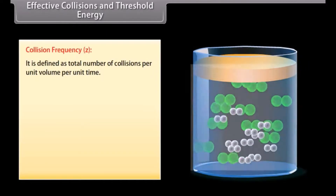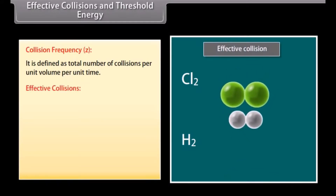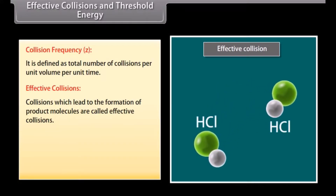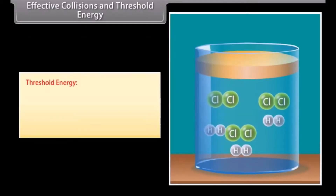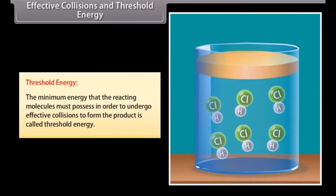Effective collisions and threshold energy. Collision frequency is defined as the total number of collisions per unit volume per unit time. Effective collisions are those which lead to the formation of product molecules. Rate of reaction = F × Z, where Z is the collision frequency and F is the fraction of collisions which are effective. Threshold energy is the minimum energy that the reacting molecules must possess in order to undergo effective collisions to form the product.